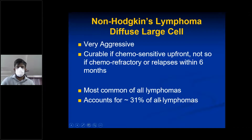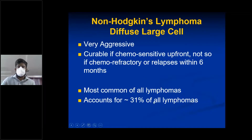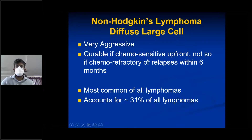Diffuse large B-cell lymphoma is the most common of all lymphomas, accounting for 31% of all lymphomas. It is the most common type and is very aggressive, but curable if chemotherapy-sensitive up front.